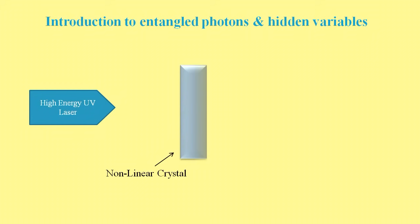Now let's cover some of the basics. One way to create entangled photons is to fire high-energy ultraviolet light into a non-linear crystal. Most of the high-energy photons pass straight through, but occasionally one will hit the crystal lattice and split into two photons, each with half the energy of the original.